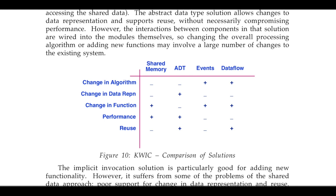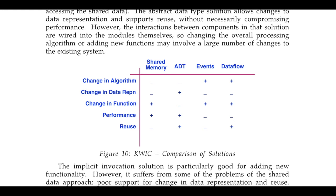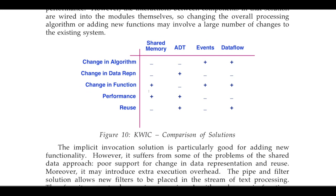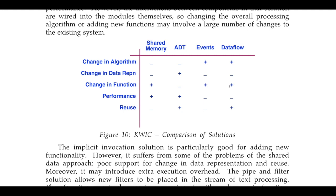They have given a nice summary matrix comparing the four approaches: shared memory with subroutines, abstract data types with object-oriented design, event-driven, and pipe and filter. For changes in algorithm, event-driven design and pipe and filter are very well suited. For changes in data representation, abstract data type is the best because it provides interfaces to the data. For changes in function, subroutines are more straightforward; abstract data types have a performance issue; with events you can register multiple components; and with pipe and filter you can just add another filter.